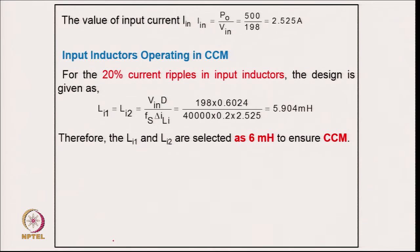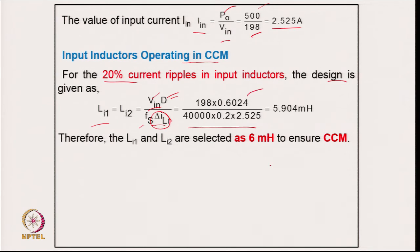The average input current from power divided by input average voltage: 500 / 198 = 2.525 A. The input inductors operate in CCM with 20 percent ripple. The inductance is calculated from the applied input voltage for the on-period and switching frequency, giving 5.904 mH. To ensure CCM operation, a slightly higher value is selected: L_i1 and L_i2 are selected as 6 mH.